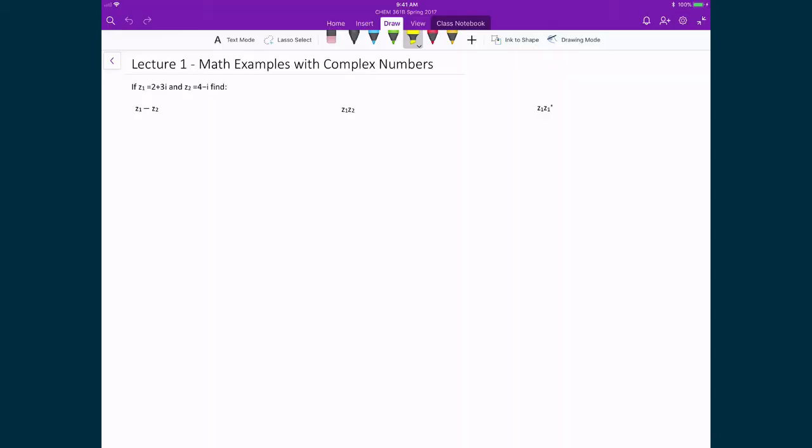Alright, so let's do a couple of quick examples so that we can get a better grasp on how to do multiplication, addition, as well as finding complex conjugates of complex numbers. And so in this example, what we've defined is a number z1 being a complex number, and that's equal to 2 plus 3i, and we have a second complex number, z2, which is equal to 4 minus i. And what we're going to find is the subtraction of these two numbers, z1 minus z2, the multiplication of these two numbers, z1 times z2, and what happens when we multiply z1 with its complex conjugate, z1 star. Starting first with the subtraction, z1 minus z2,